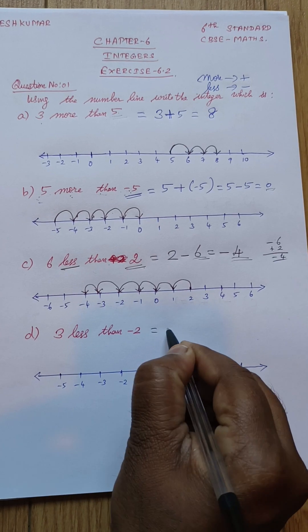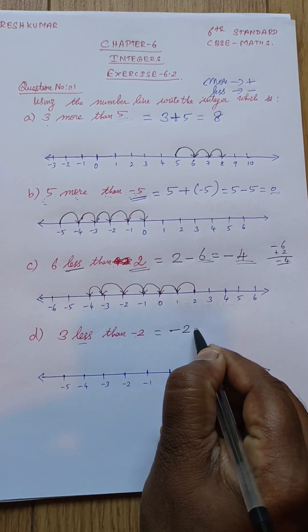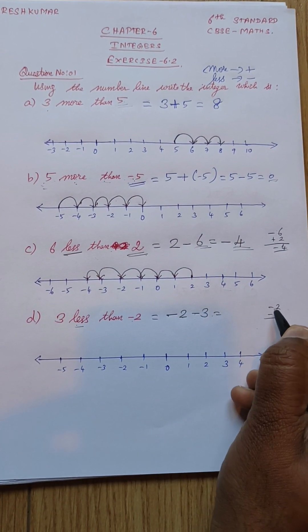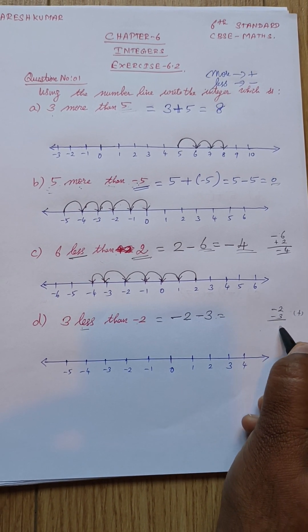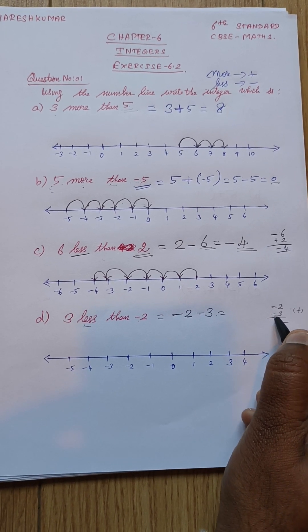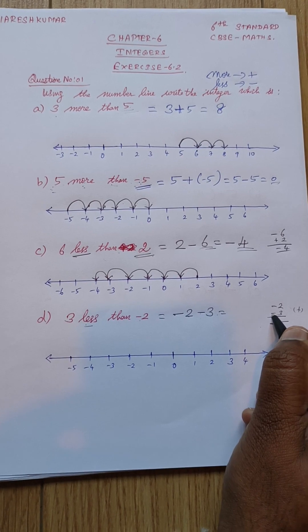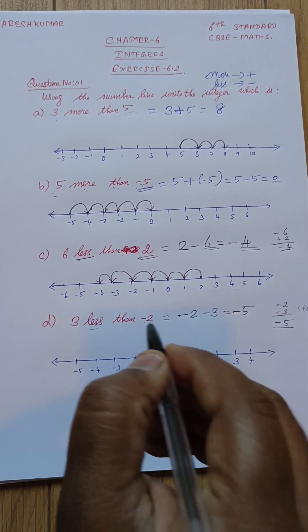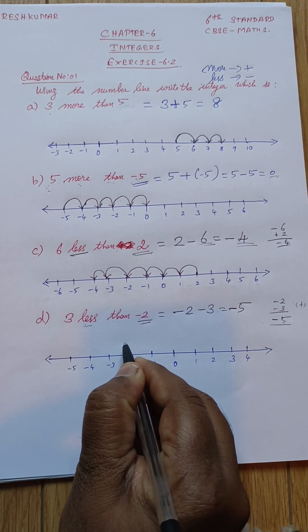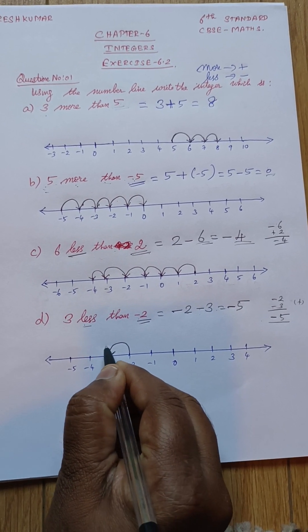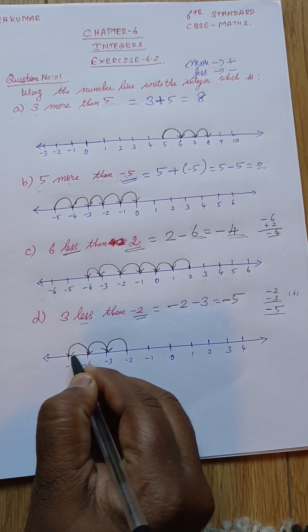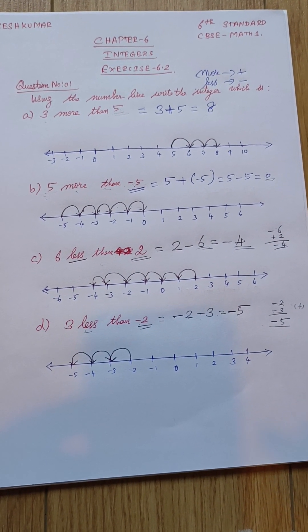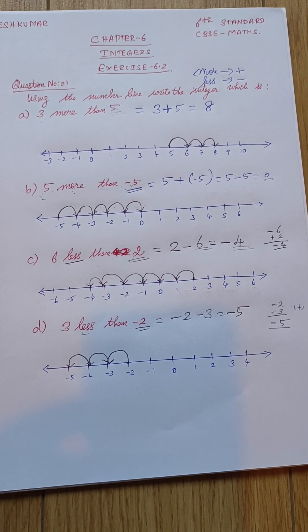Next: three less than minus two. 'Less' means minus, so minus two minus three. Minus into minus is plus, so two plus three equals five, and since the sign is minus, the answer is minus five. On the number line, we start from minus two and go to minus five: one, two, three. This is the method for drawing the number line for integers.